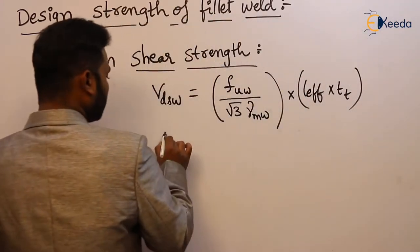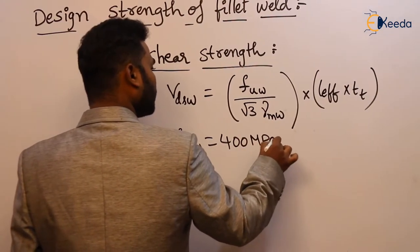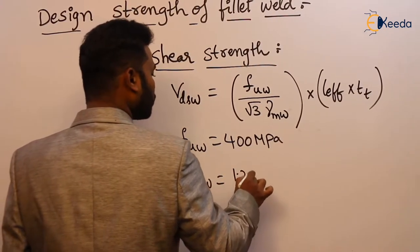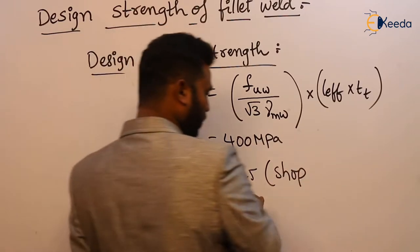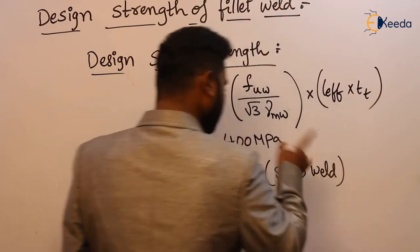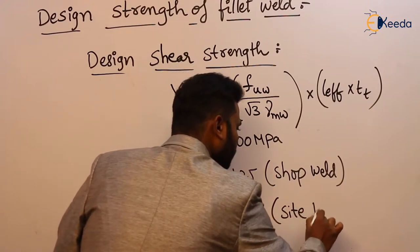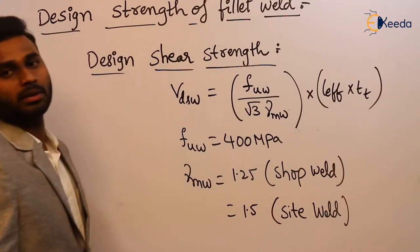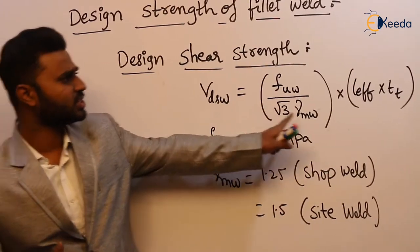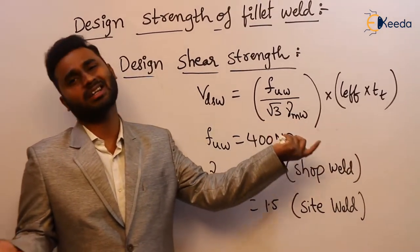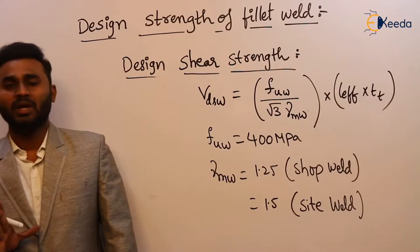We know that F_UW is 400 or 410 MPa, and gamma_MW — the material factor of safety — is 1.25 for shop weld, meaning if the welding is done in the workshop or industry. But if the same weld is done in the field, then we have to use 1.5 for site weld or field weld. This is the design shear strength of fillet weld — simply stress into area with the appropriate code-prescribed factors.